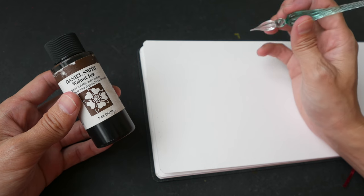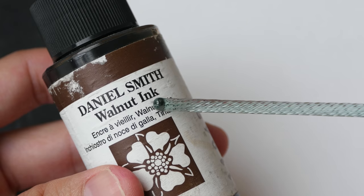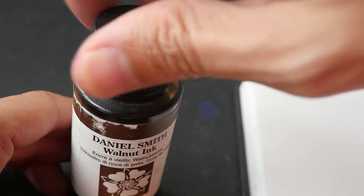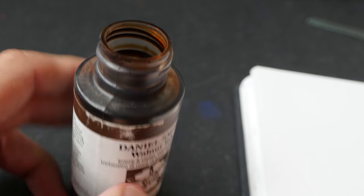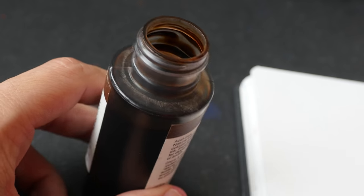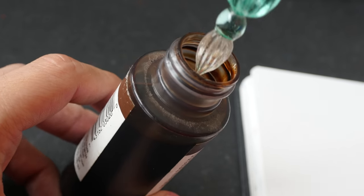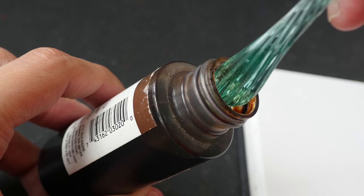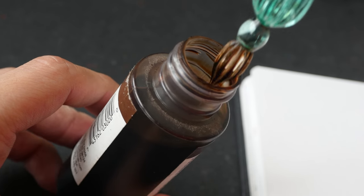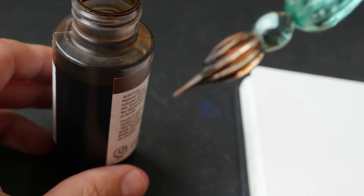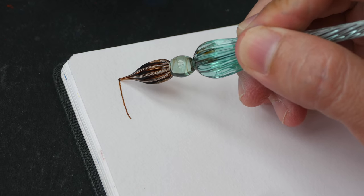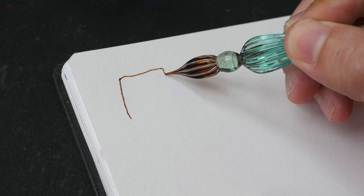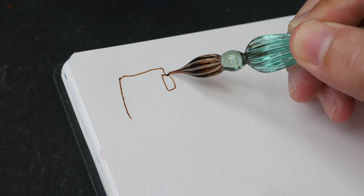All right, let's draw something. The ink that I'll be using is the Daniel Smith Walnut Ink. The reason why I chose this ink is because I still have a large bottle of it left. So let's dip this pen into the ink. So the ink is now collected on the grooves. I'm just going to draw a public bus here in Singapore.